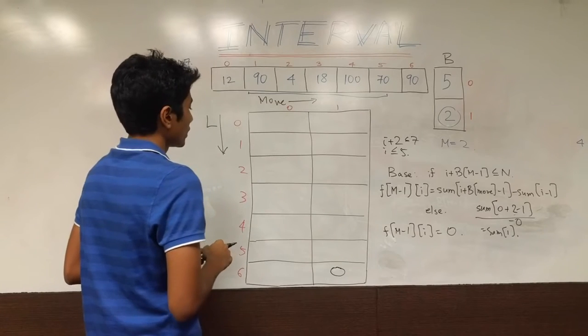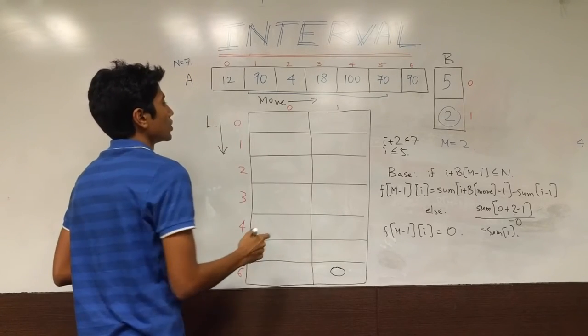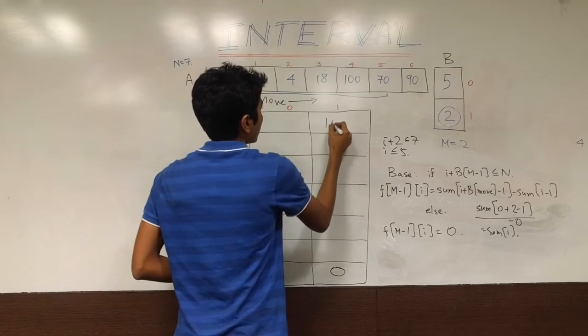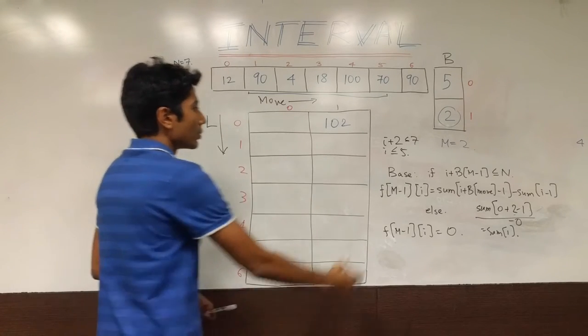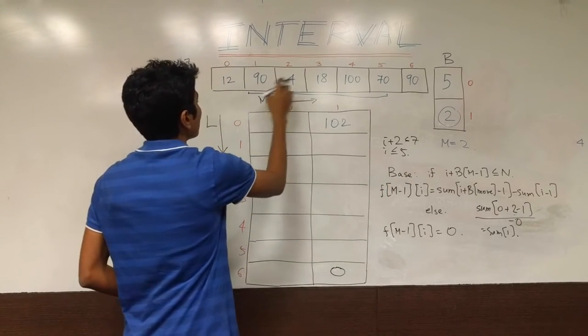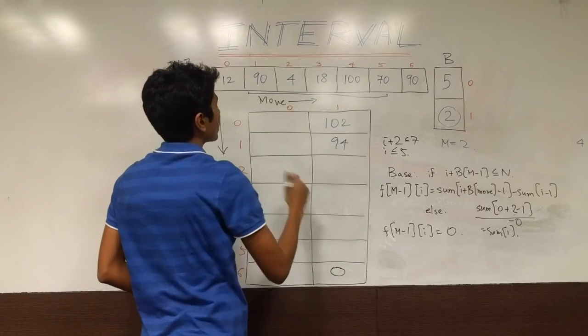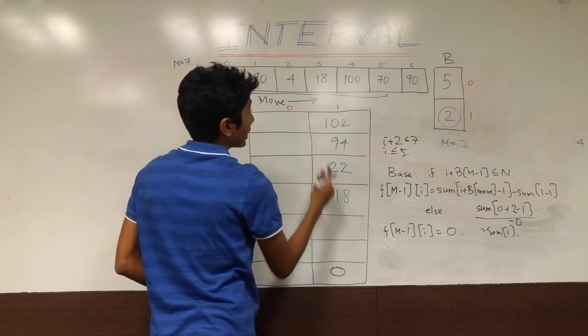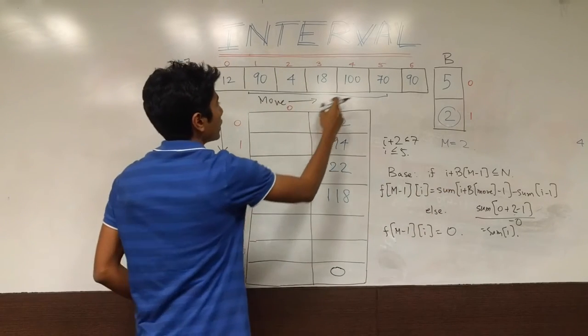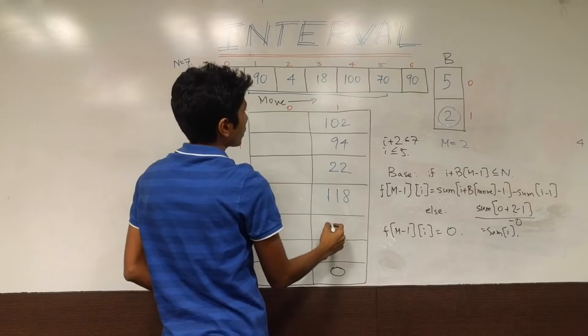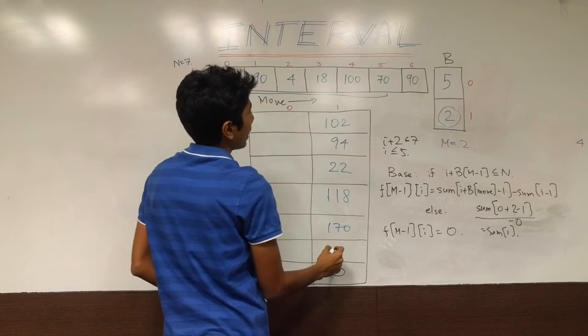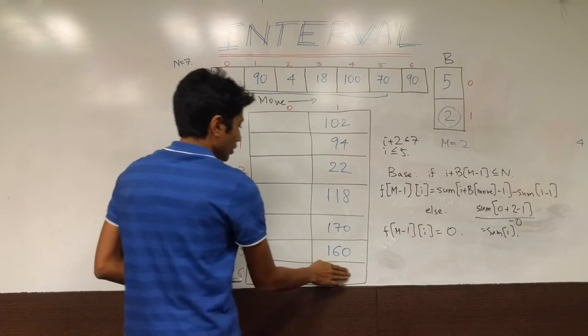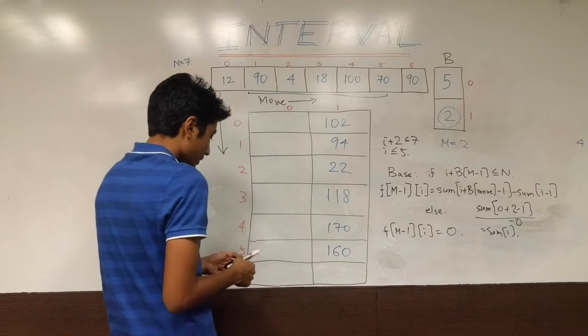What does that come out to be? 12 plus 90, which is 102. Let's just write this in blue. 102 is what we are looking at. Similarly for the other conditions it will be 90 plus 4, which is 94. Over here it will be 22. 118, getting two elements together because that's the size of the square. And then 170, and 160 is it.